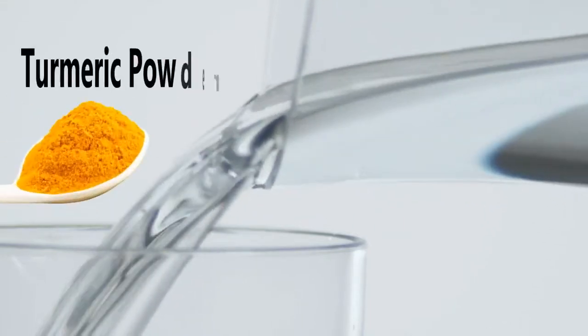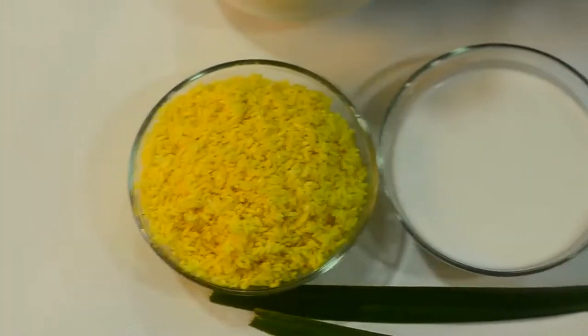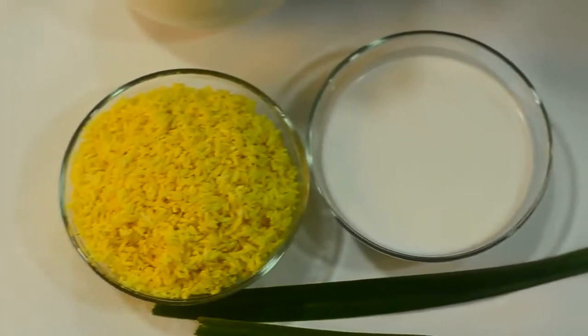Pour water into a bowl, then add in some turmeric powder and the glutinous rice. Soak the rice in the turmeric water for 5 to 6 hours. You will then get yellow glutinous rice.